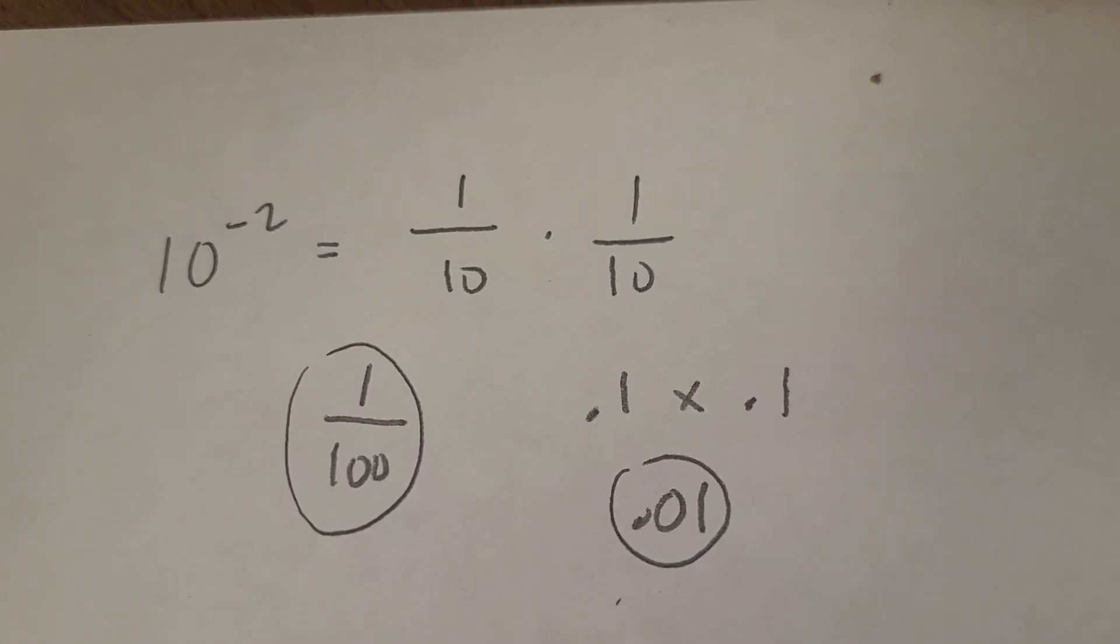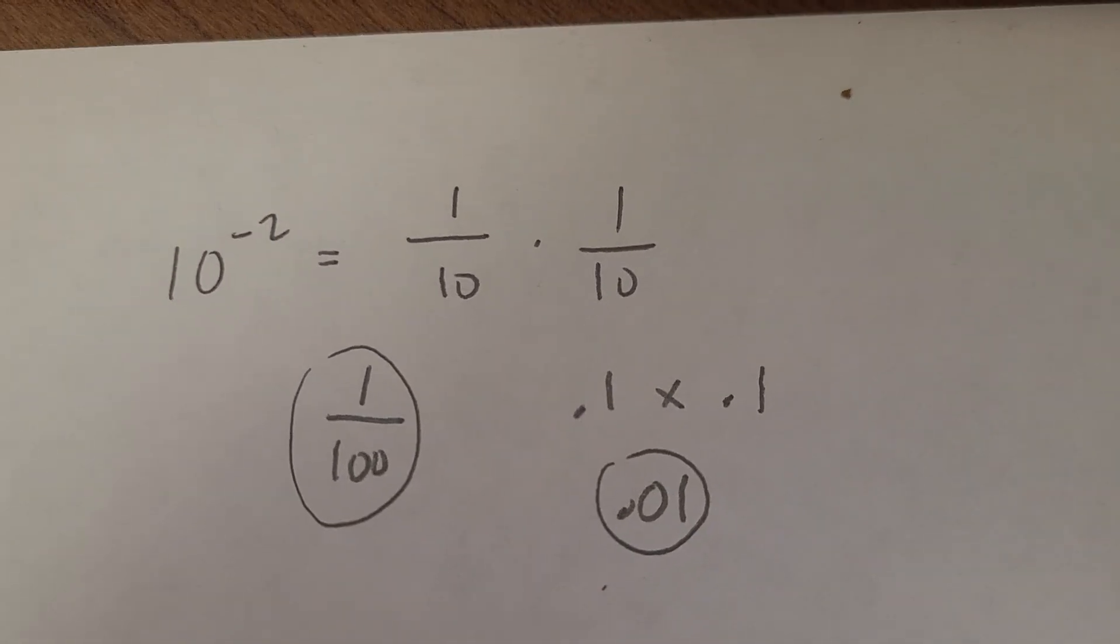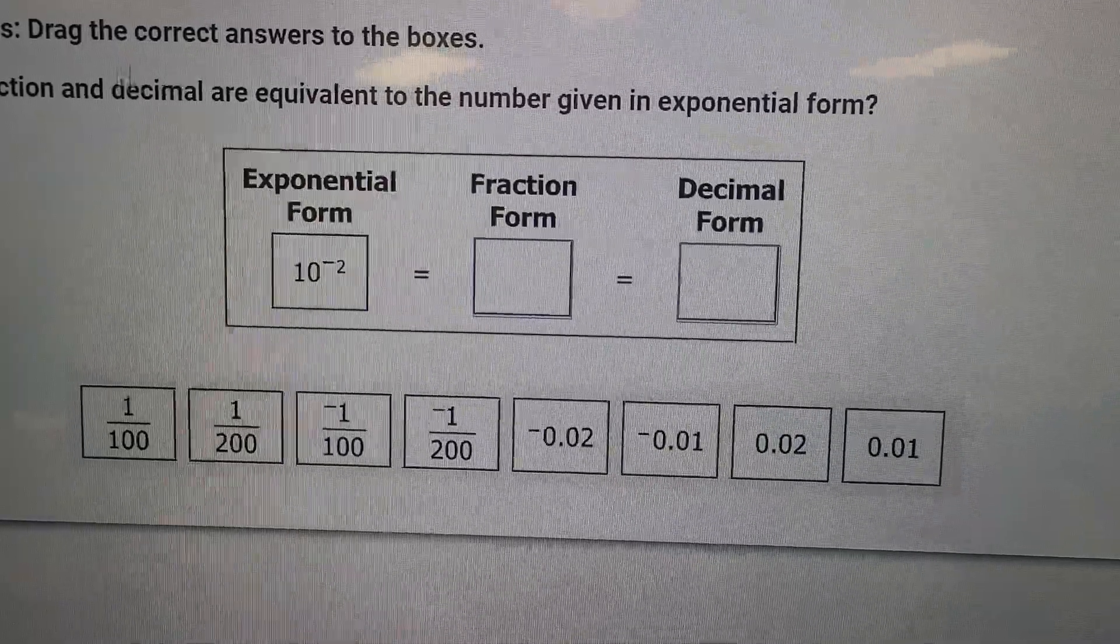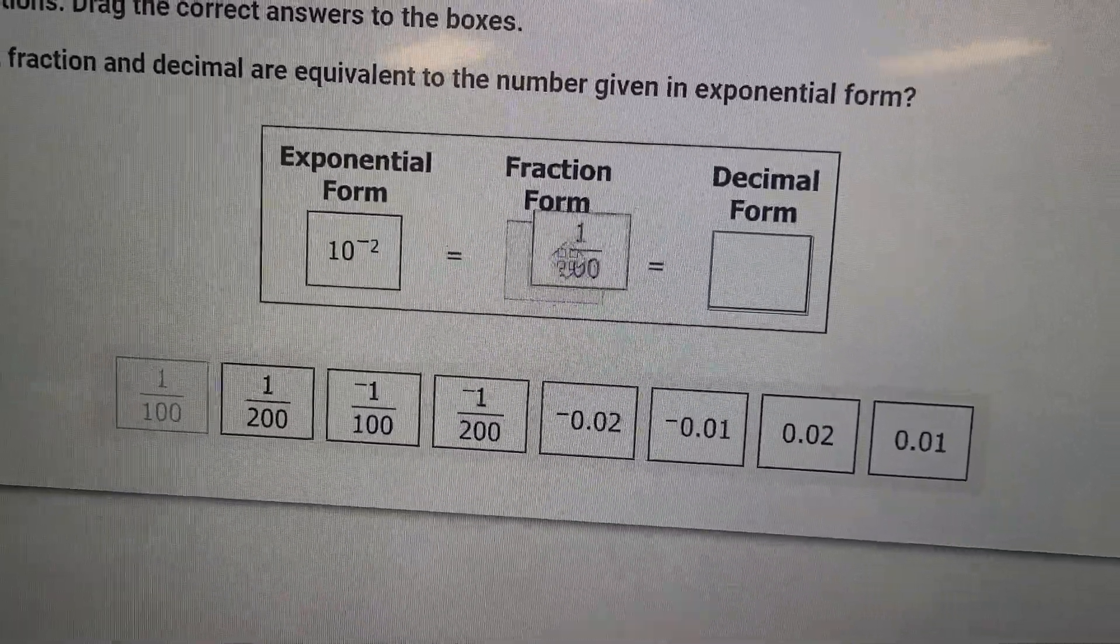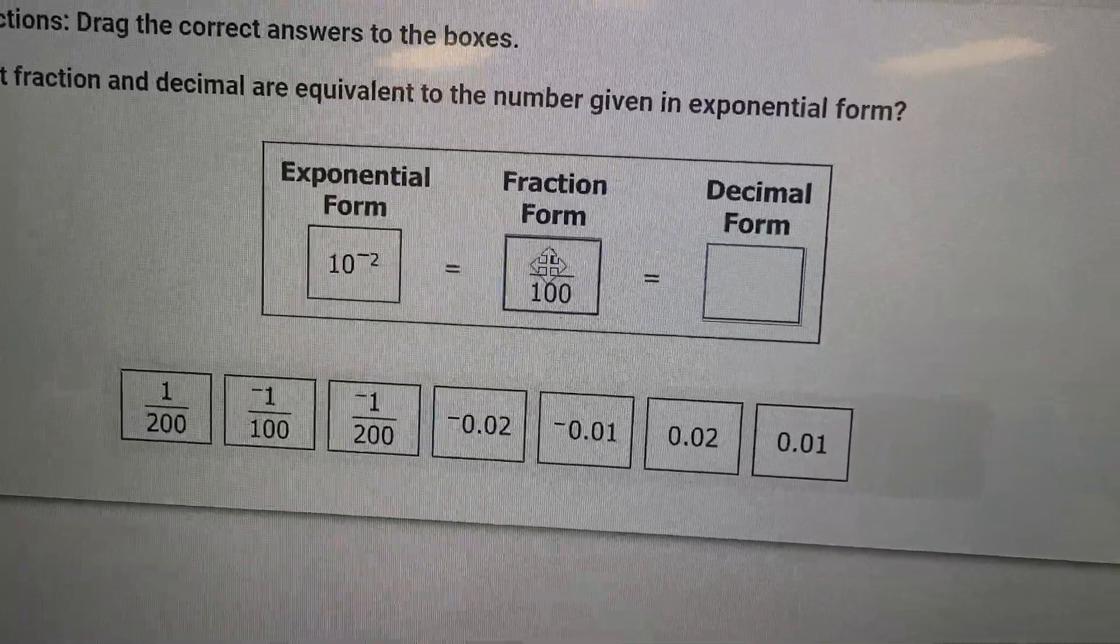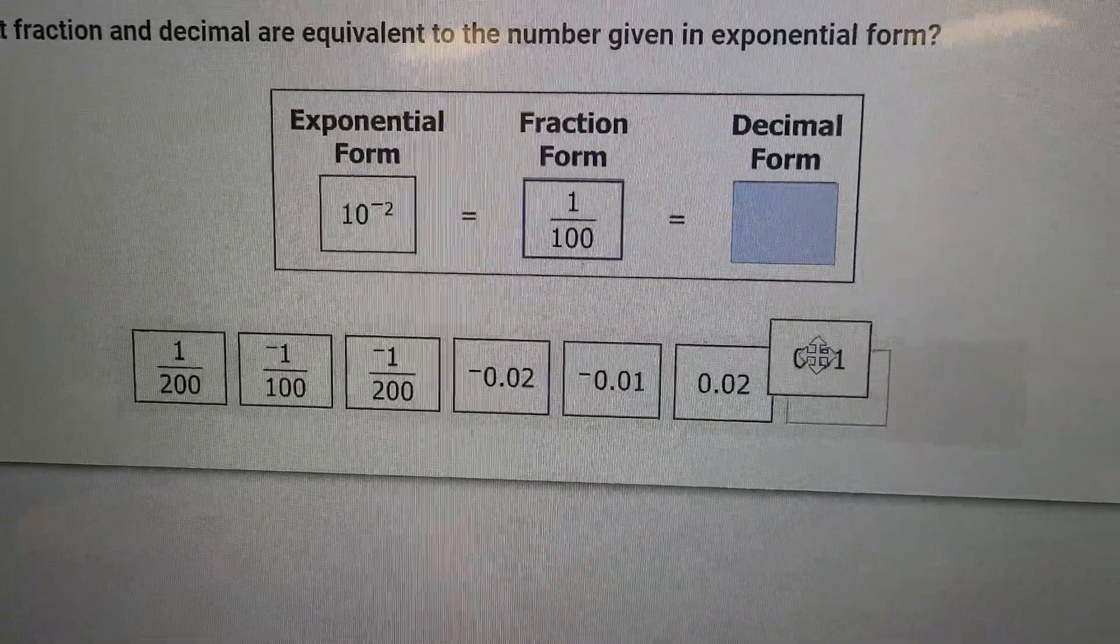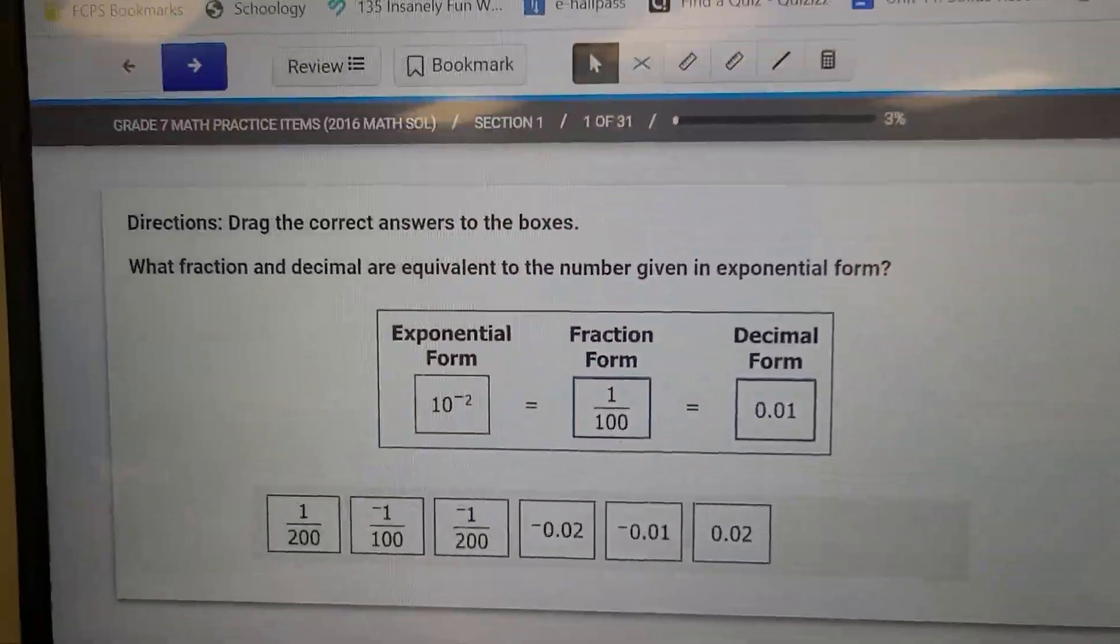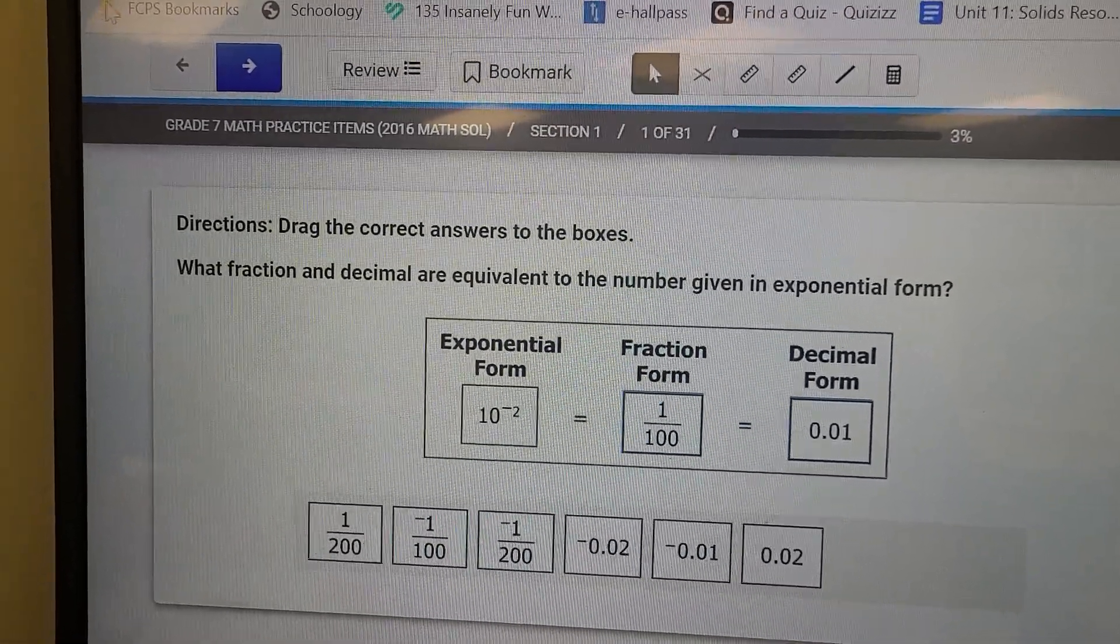That looks pretty good. So back to my computer, I'll take 1 over 100 and click it and drag it into the box, and also drag 0.01 into this box. There's your decimal.